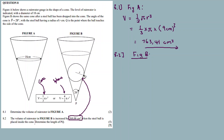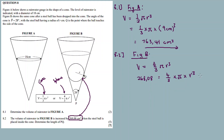When the steel ball is placed inside the cone, determine the length of PQ. First we need to find the radius of the sphere. We are given that the volume of the sphere equals 268.08 cm³. Using the sphere volume formula: V = four-thirds times pi times r cubed, so 268.08 = four-thirds times pi times r cubed.